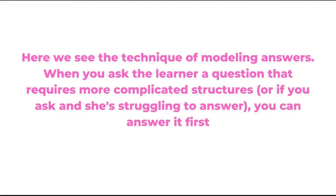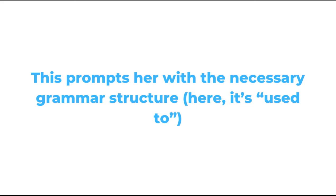Now let's move on to our childhood preferences. What are some things that you liked to do when you were younger? For example, I used to like watching cartoons and spending time outdoors with my friends — and you? Here we see the technique of modeling answers. When you ask a learner a question that requires more complicated structures, or if you ask and she's struggling to answer, you can answer it first. This prompts her with the necessary grammar structure — here, it's "used to."